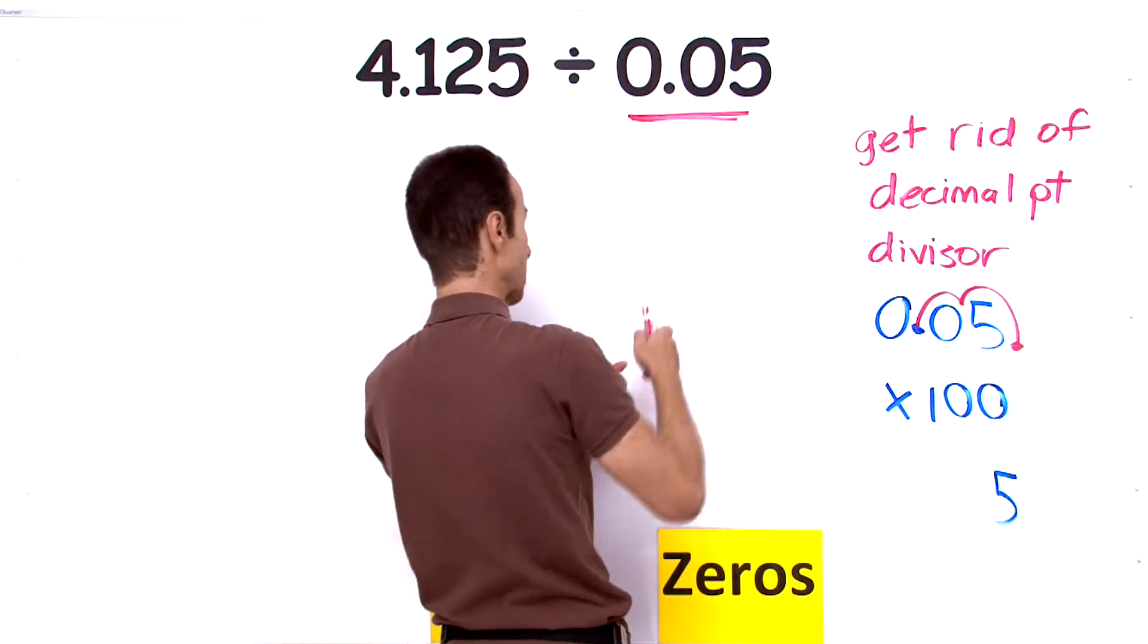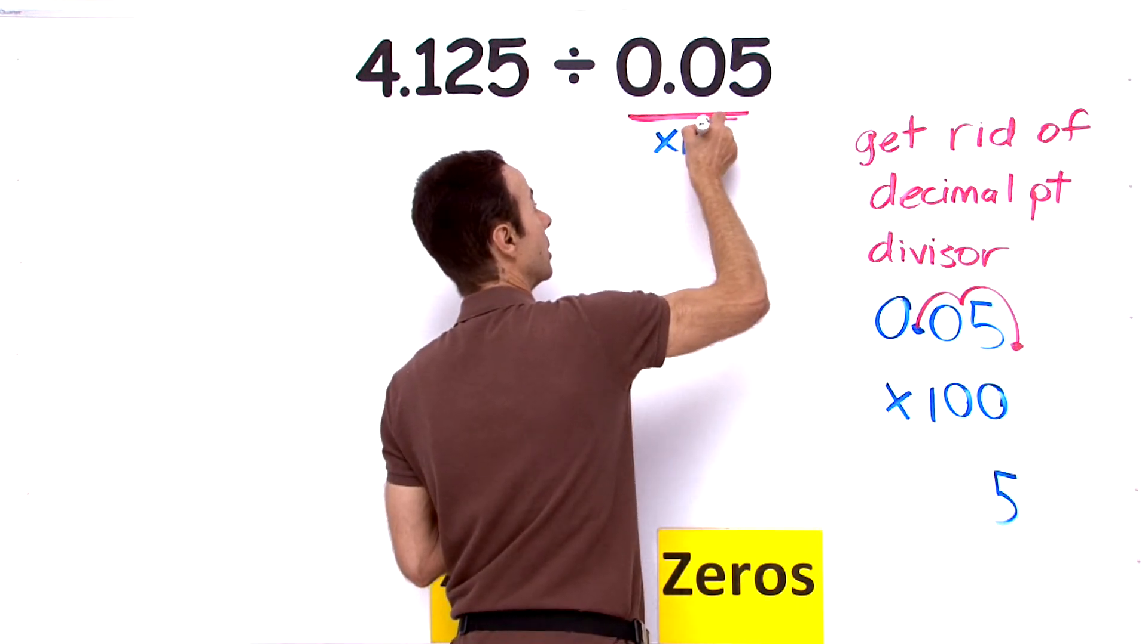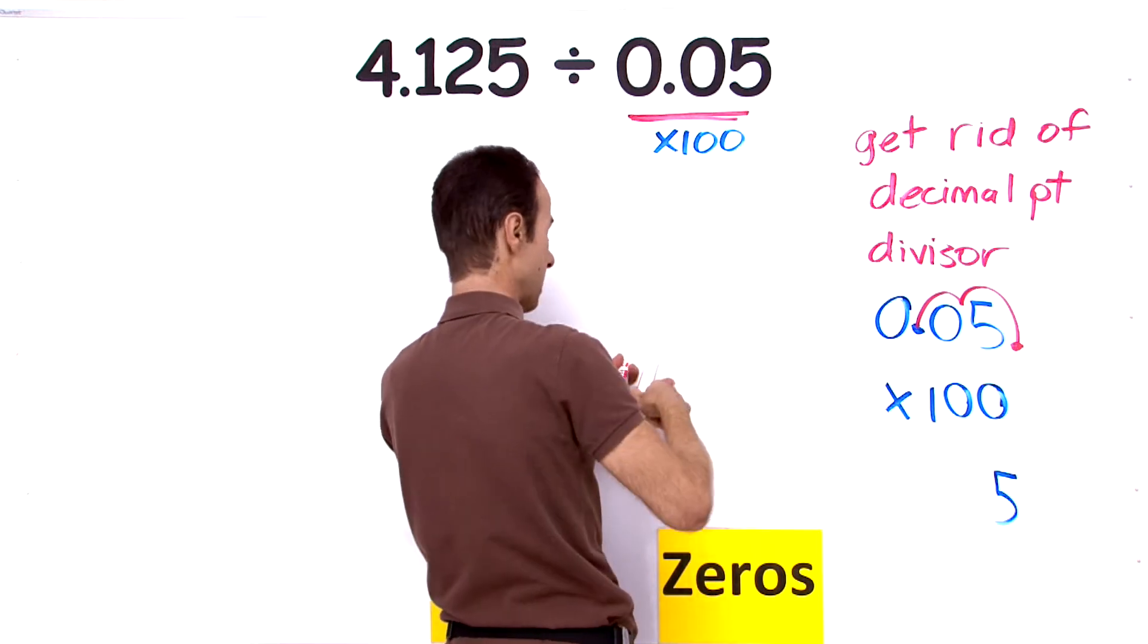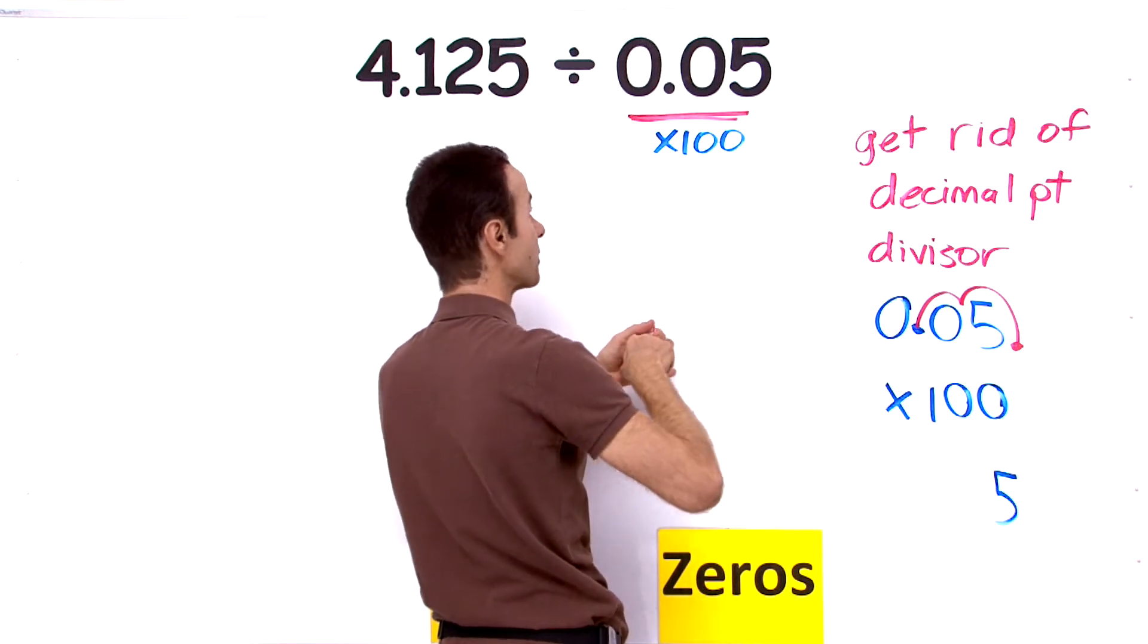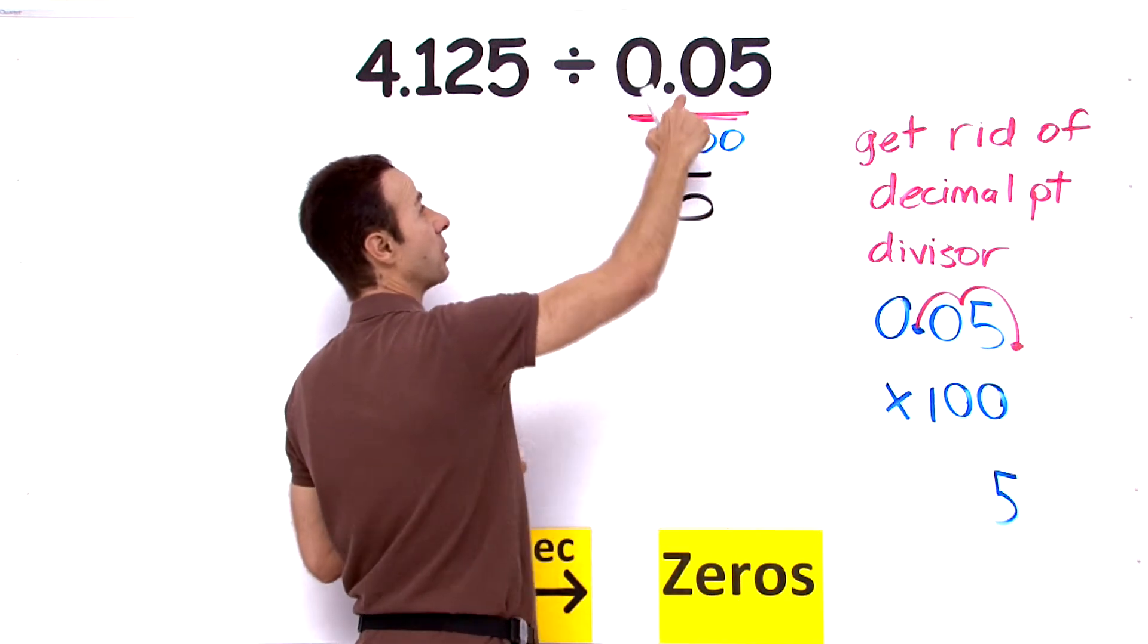So to eliminate the decimal point, we multiplied by 100, and that becomes 5. There is our 5. Multiply by 100: 5.